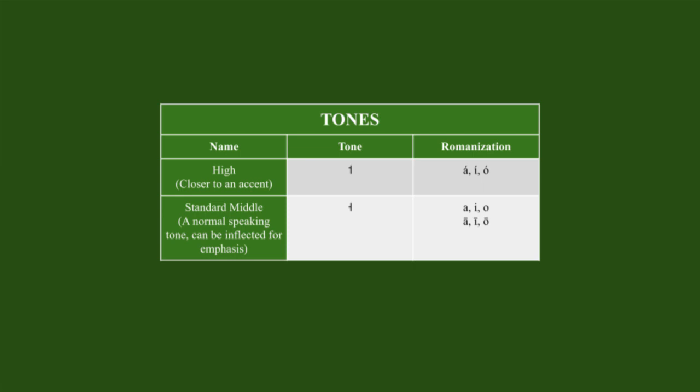Furthermore, syllables are always CV — consonant, vowel. Stress depends on tone. And the word order is subject, verb, object. But I've talked a lot about lingual evolution, so I think it's time to talk about grammar.